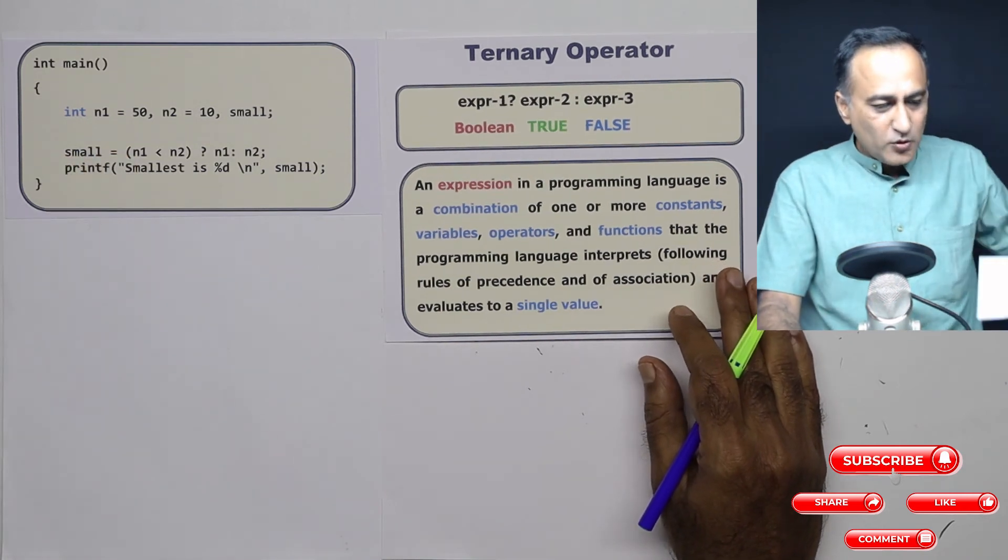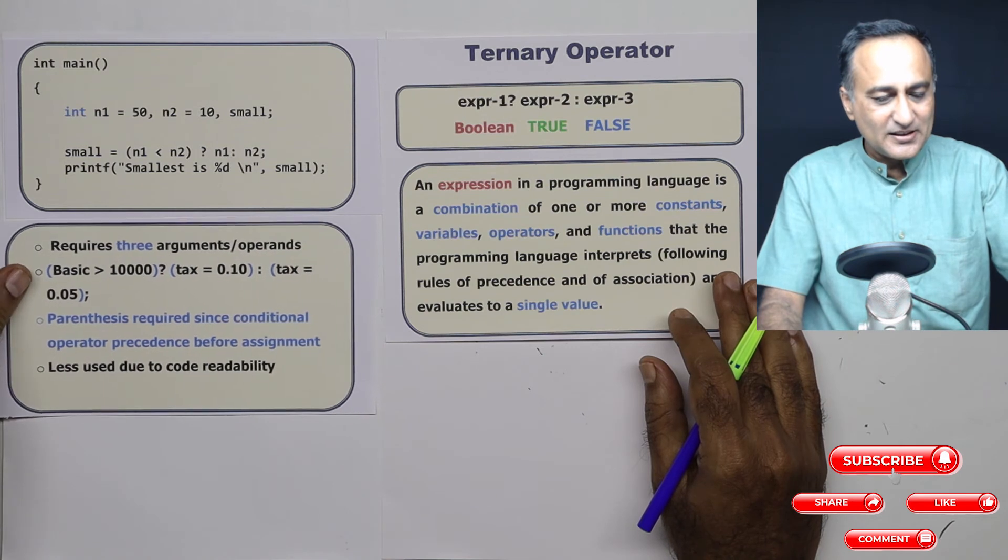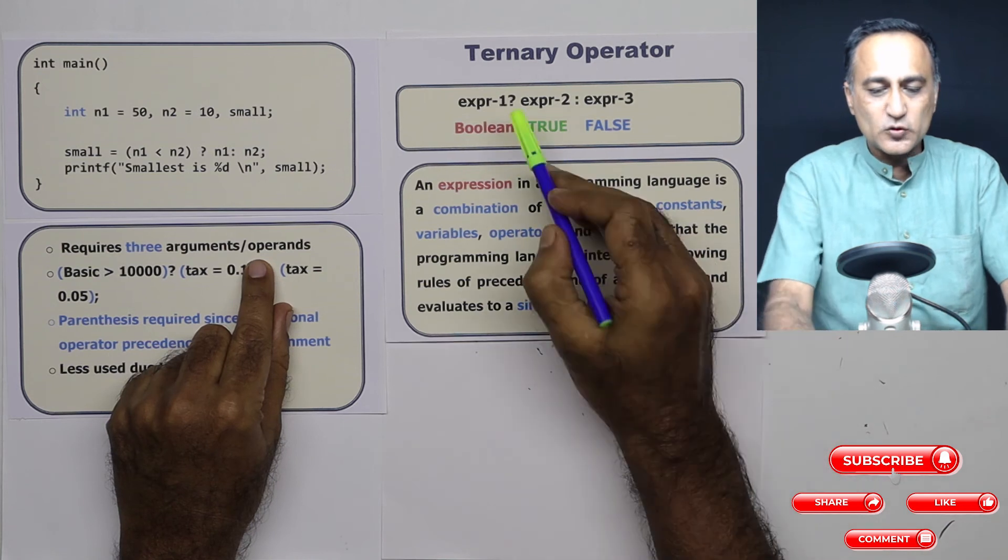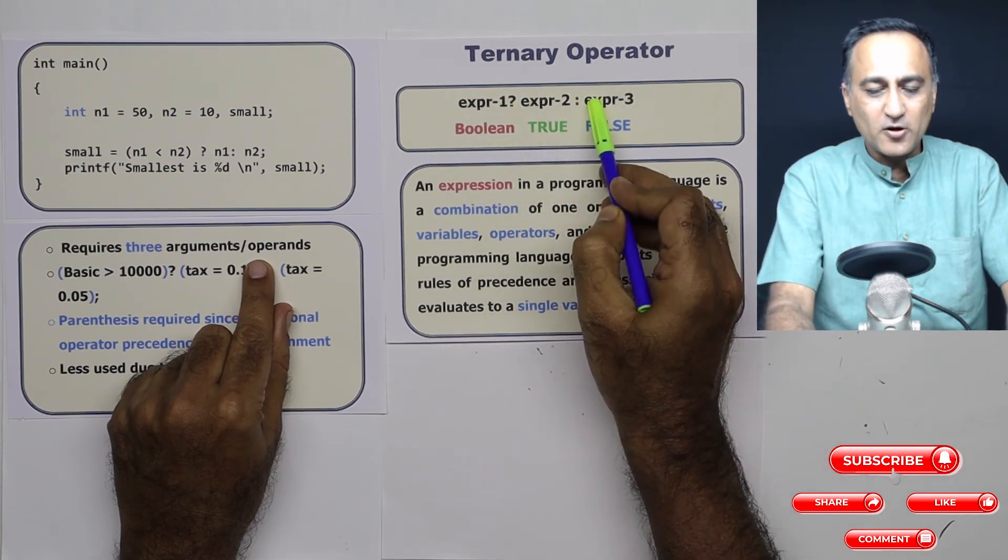So you need to understand that the ternary operator requires three arguments or operands. So each one of them is an operand or three arguments.